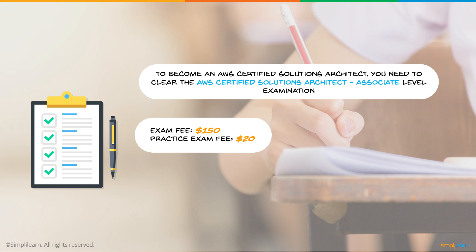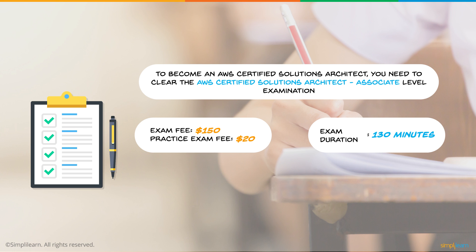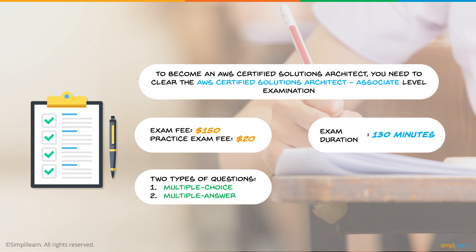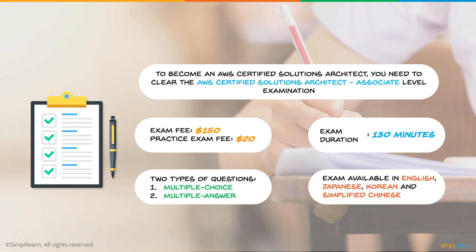The exam fee is $150, and you can also take a practice examination which costs $20. Any associate level examination — be it solutions architect, sysops administrator, or developer — costs $150. For the professional level examination it's $300. The exam duration is 130 minutes and you have two types of questions: multiple choice, with four options where one is correct, and multiple answer, with five options where two are correct. You can take the examination in English, Japanese, Korean, and simplified Chinese.